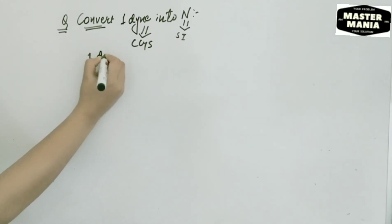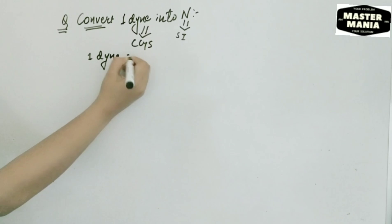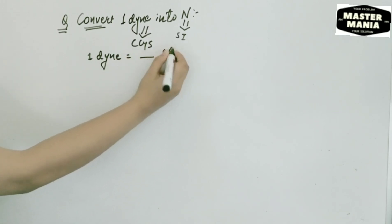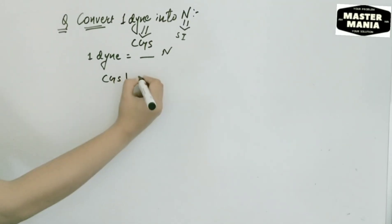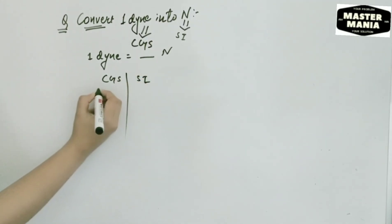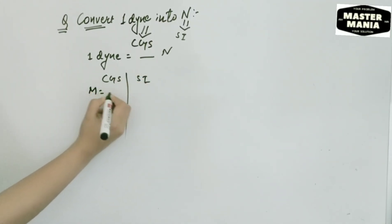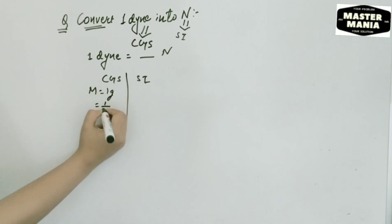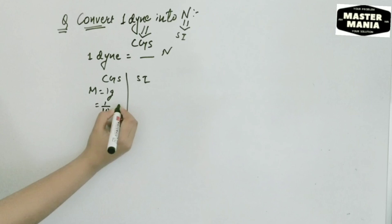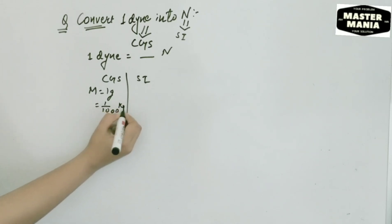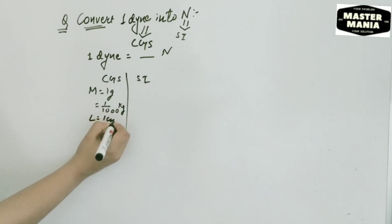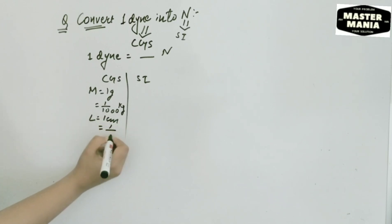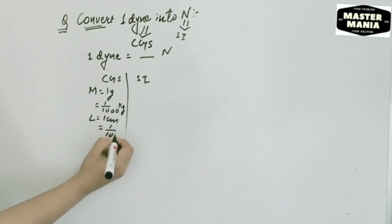First we need to write what we have to do: one dyne into newton. We will write here the CGS unit and then the SI unit. In SI unit, mass is equal to one gram, which we have to convert into kg, so we write it as one by one thousand kg. For length, we write one centimeter.